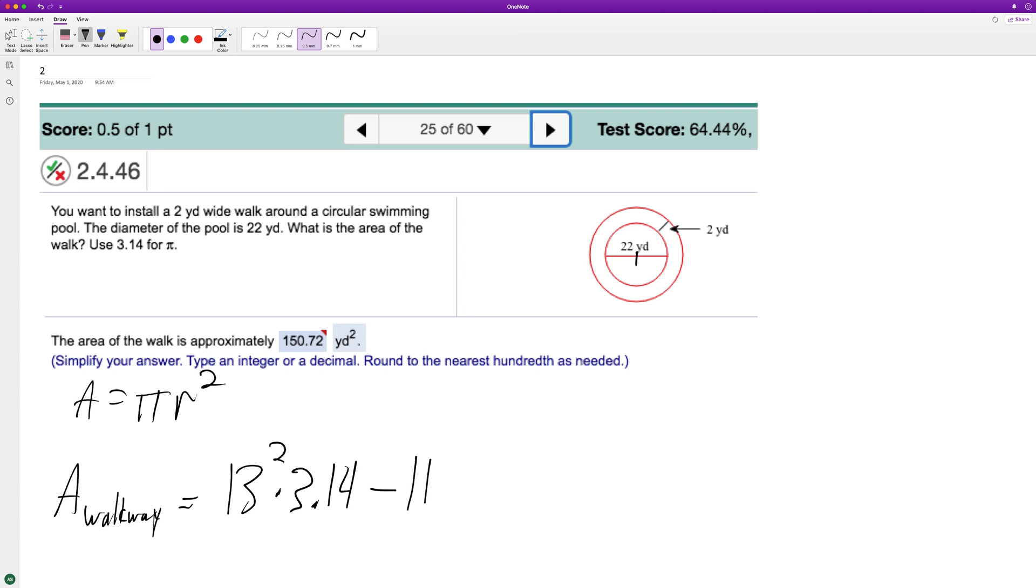11 squared times 3.14. We could factor out the 3.14, but we can punch this in and what we end up with is approximately... Let me go ahead and punch this up and show you. It's equal to 150.72.